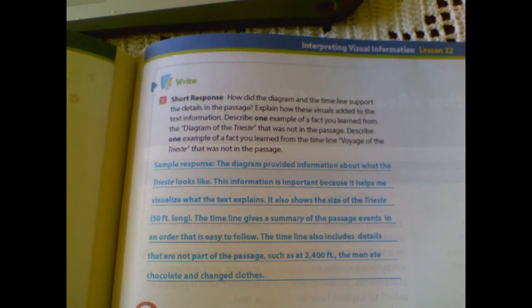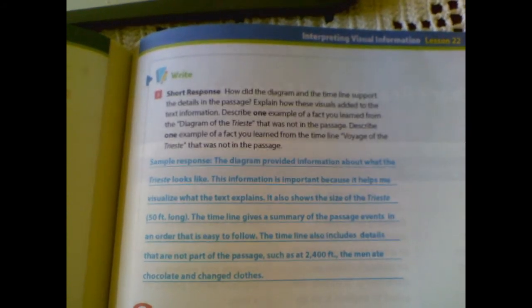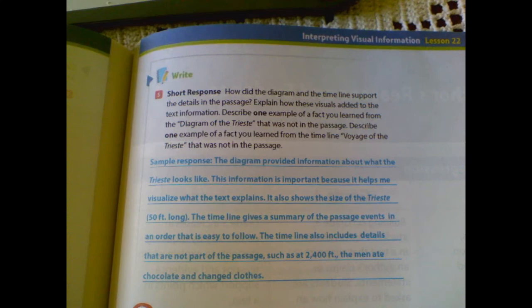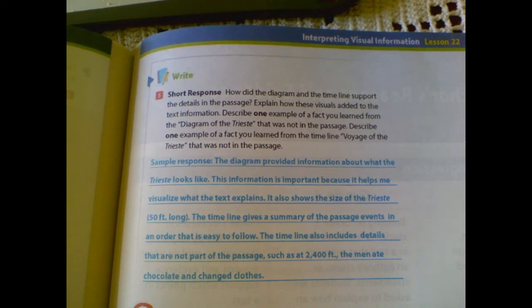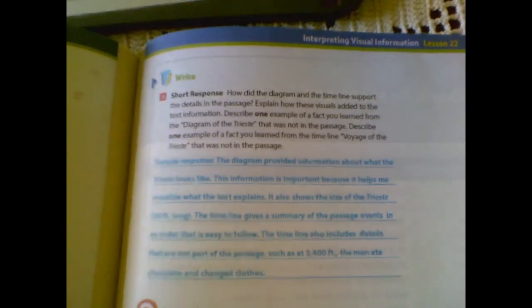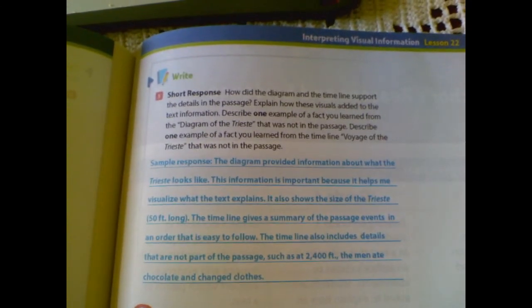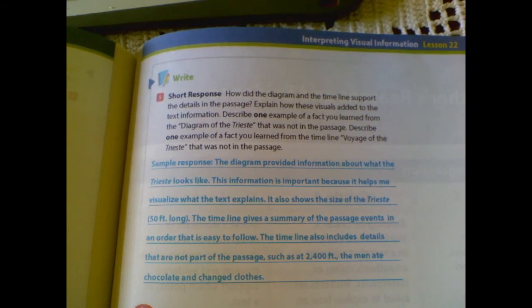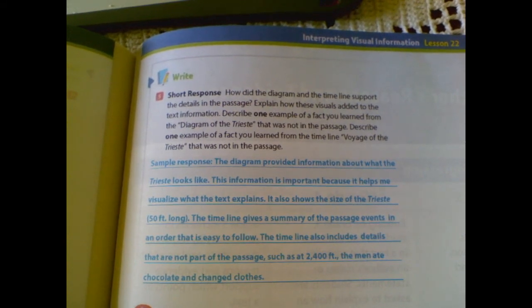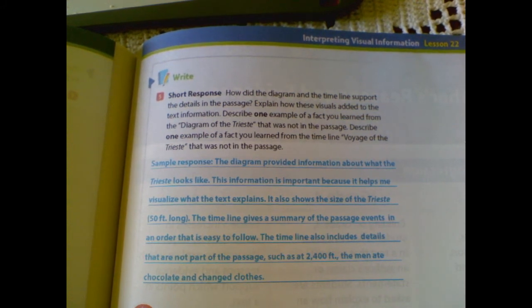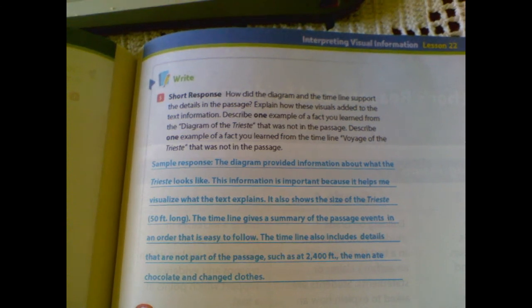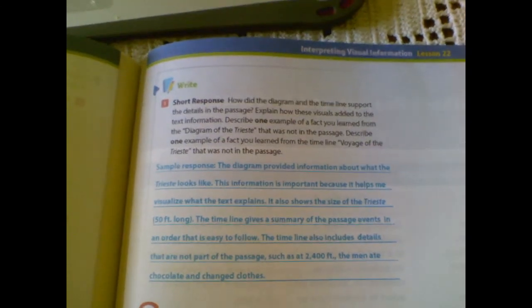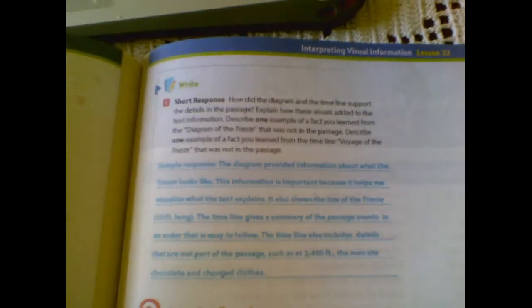So a sample response, this is an example they gave from the book. The diagram provided information about what the Trieste looked like. This information is important because it helps me visualize what the text explains. It also shows the size, which is 50 feet long. Now the timeline gives a summary of the passage events in an order that is easy to follow. The timeline also includes details that are not part of the passage, such as 2,400 feet and men ate chocolate and changed clothes. So it couldn't have been too bad down there if they were eating chocolate, right?